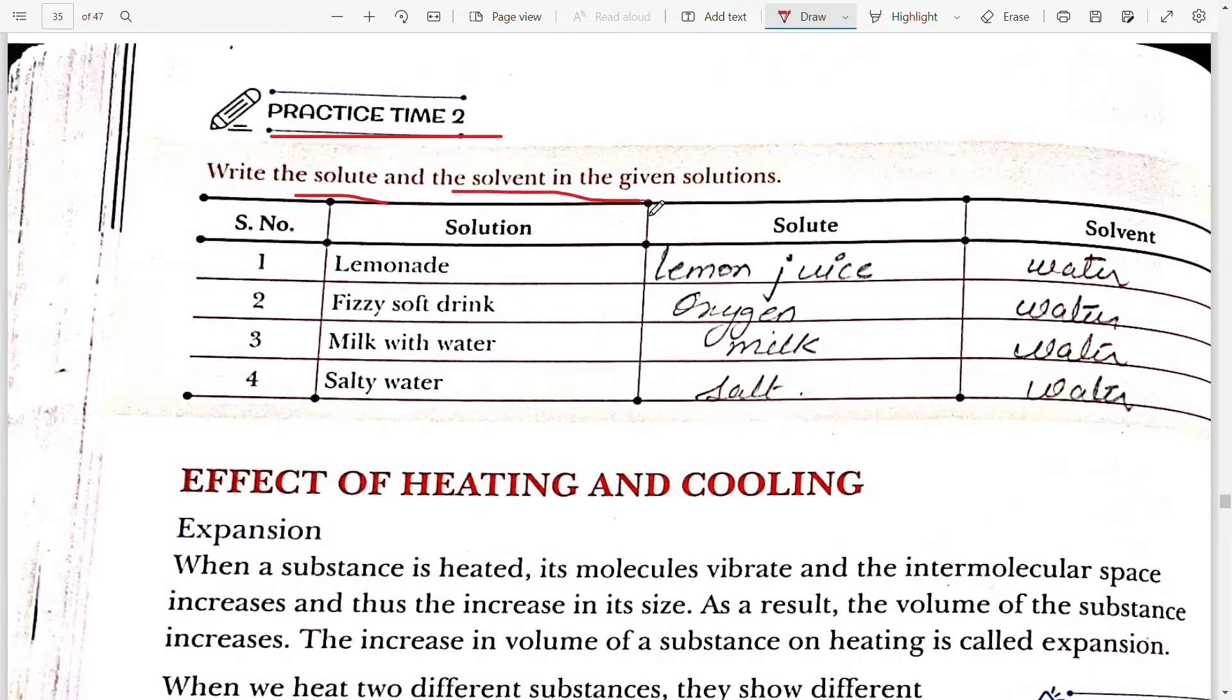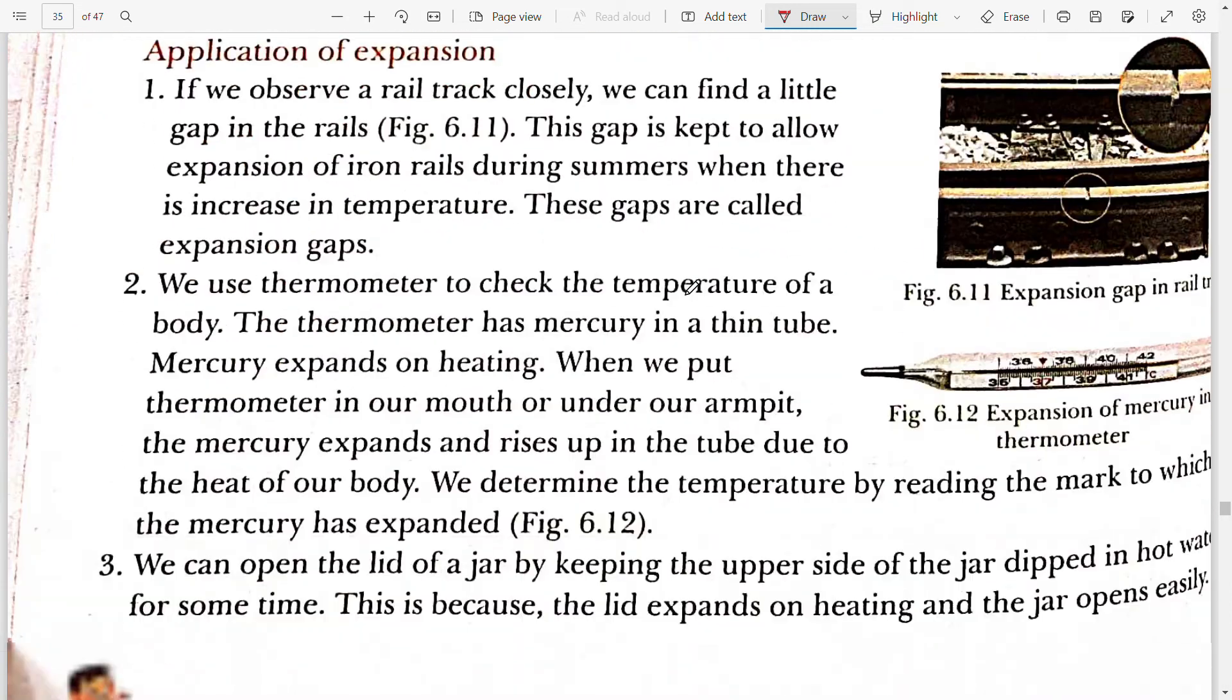Now Practice Time 2: write the solute and the solvent in the given solution. First solution is given there is lemonade. Solute is lemon juice and solvent is water. Second, fizzy soft drink: solute is oxygen, solvent is water. Third, milk with water: solute is milk and solvent is water. Next solution is of salty water: solute is salt and solvent is water.